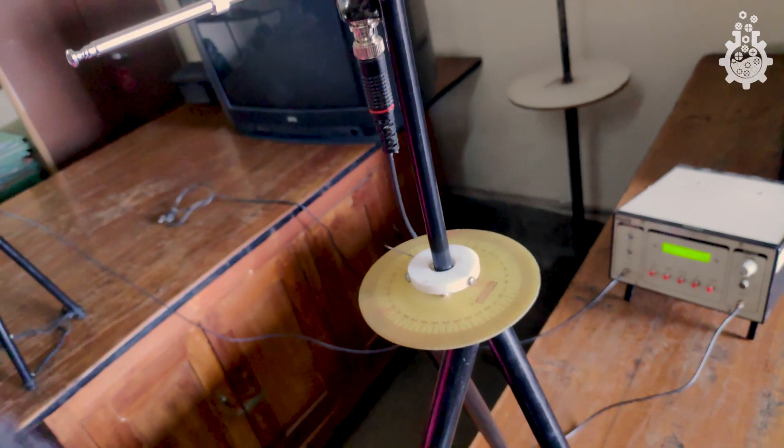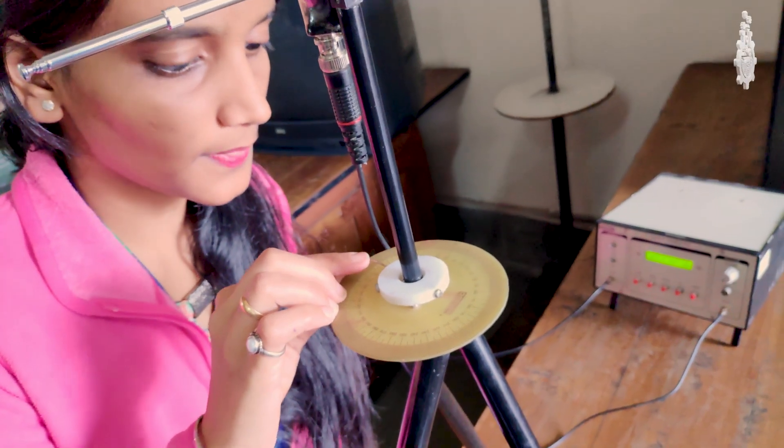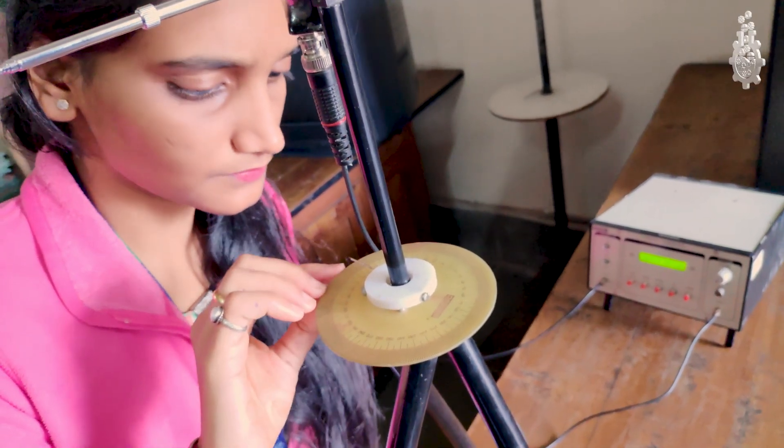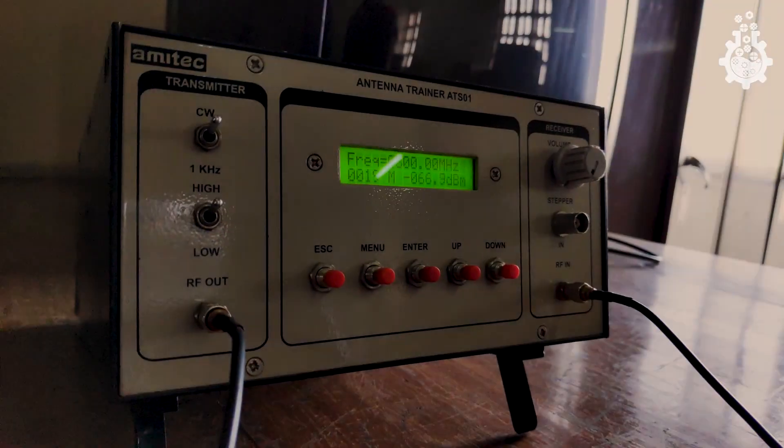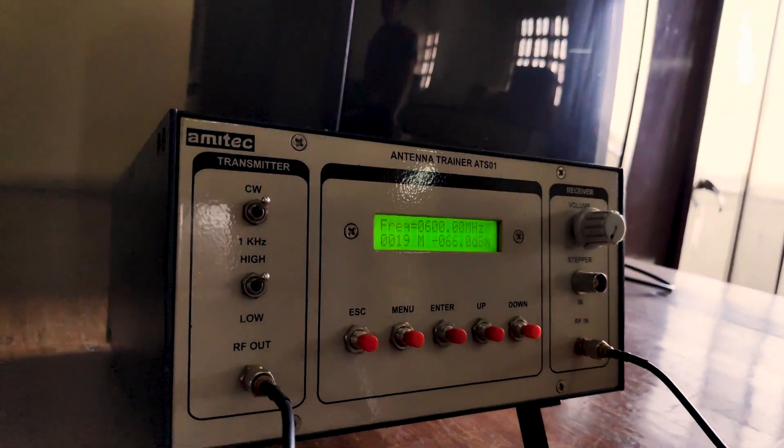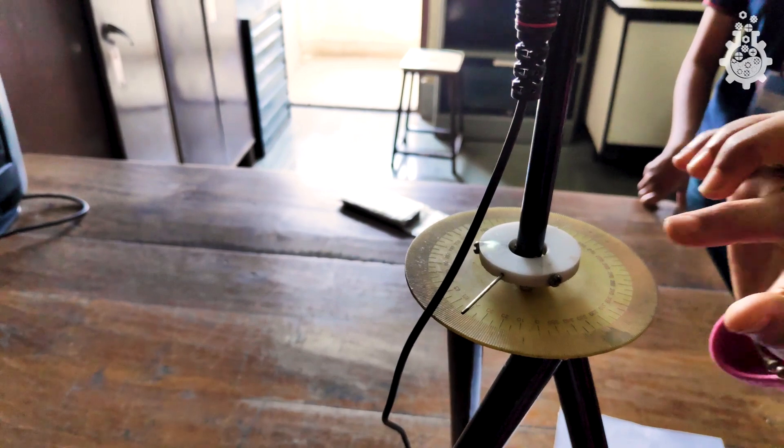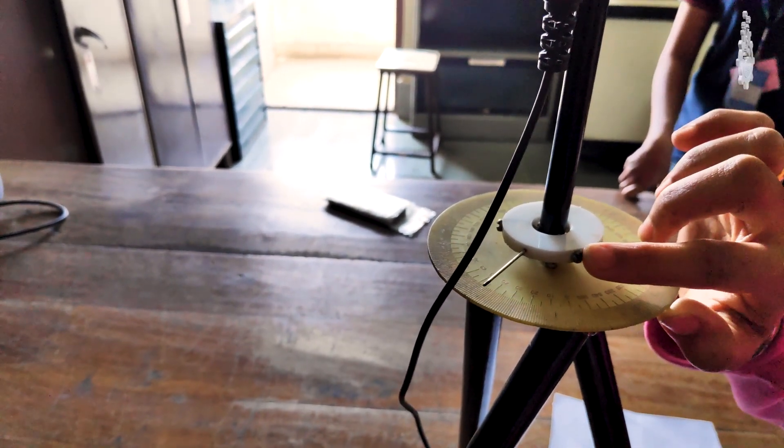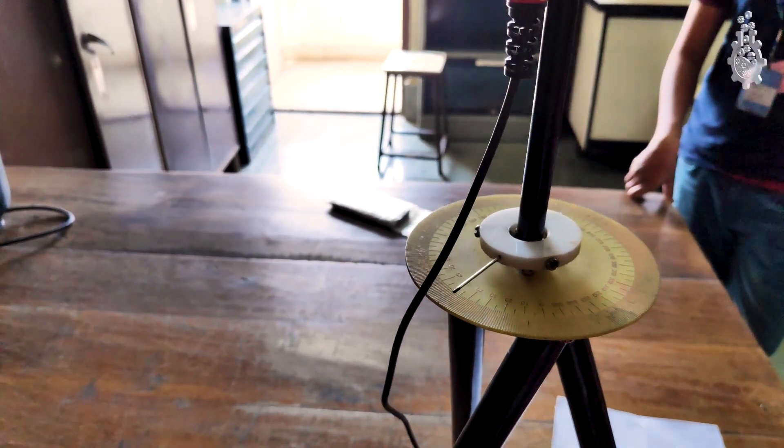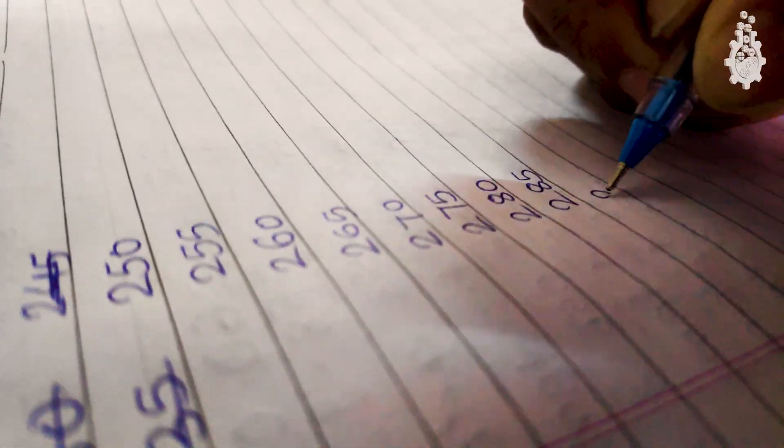We will first calibrate our receiver base at zero degrees and note down the readings on the transmitter kit, which is in dBm. We will now vary the angle in intervals of five degrees and complete a 360-degree rotation, noting down each and every reading for every angle.